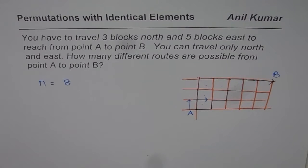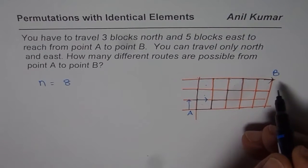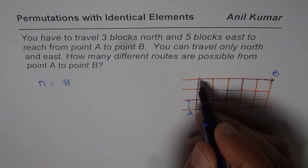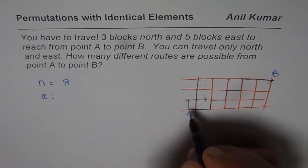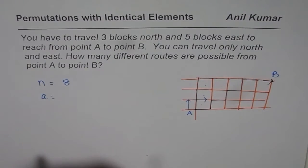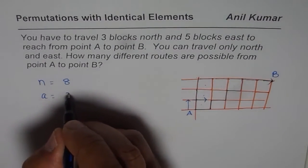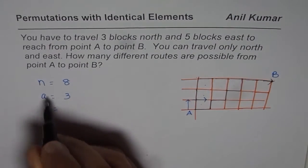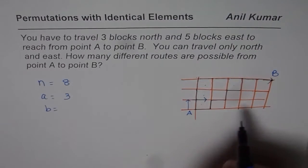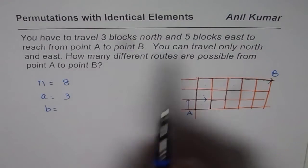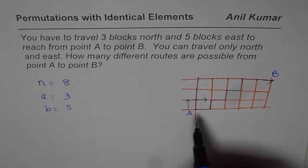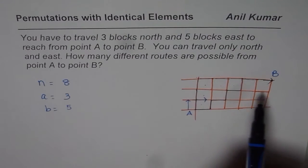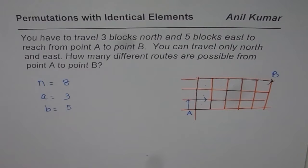What you also find is that in this route, going north will always be three steps. So we can say A, which is an identical element — moving north — is 3. And another identical element is moving east. To find unique routes, what we get as our solution is...